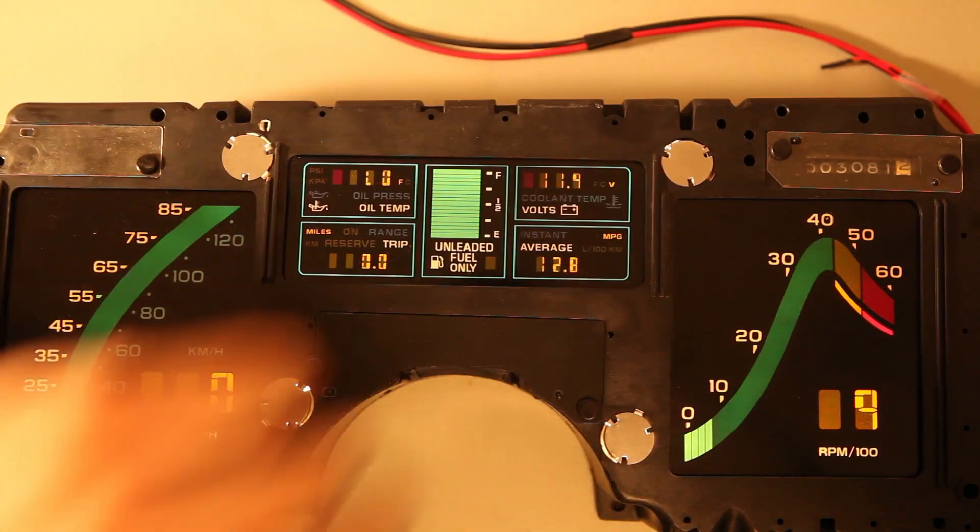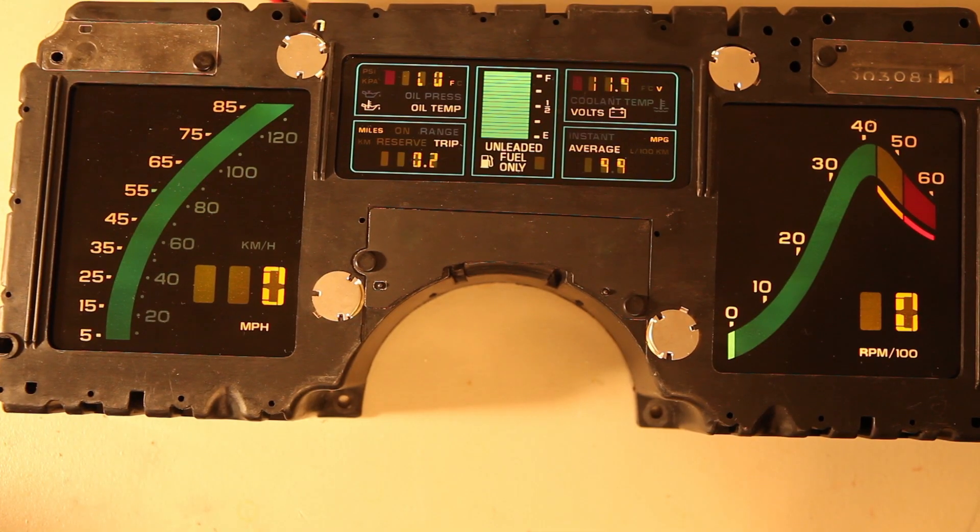We'll turn the signal generator off and reset. Next we've connected the signal generator to pins D11 and C15. This feeds an input to the speedometer function of the cluster.